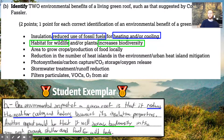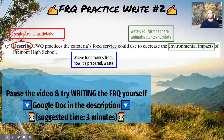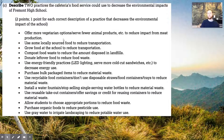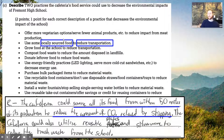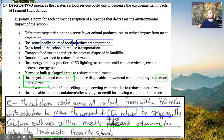Pause the video now and try writing the second FRQ practice, then we'll score it together. The first point is earned for citing that the school should locally source food to reduce transportation. The student said the school should source food from within 50 miles to reduce the amount of carbon dioxide released by shipping — and importantly, they mentioned the specific reduced carbon dioxide emission rather than 'harmful chemicals.' They also earned a point for using reusable plates and silverware to reduce trash waste. They could have strengthened this by connecting it to landfills, but it was enough to earn both points.